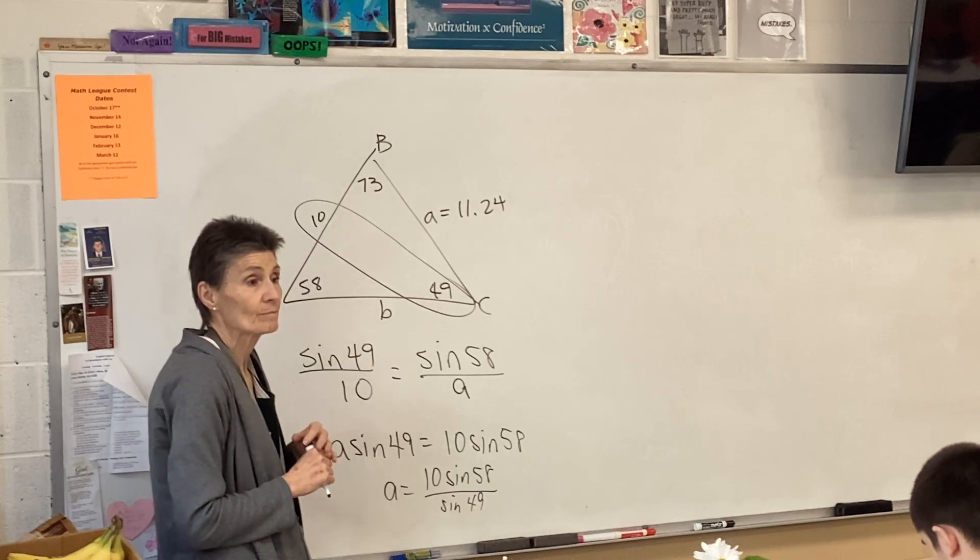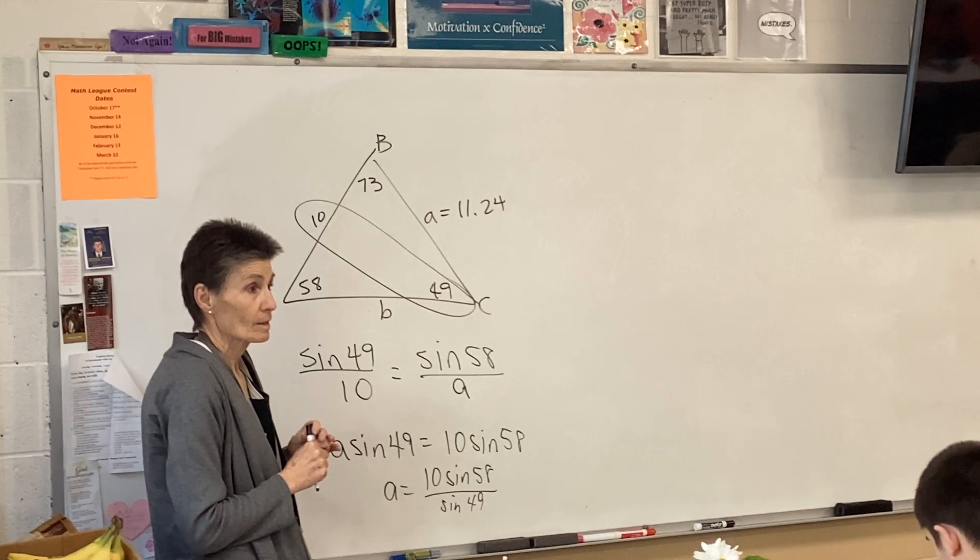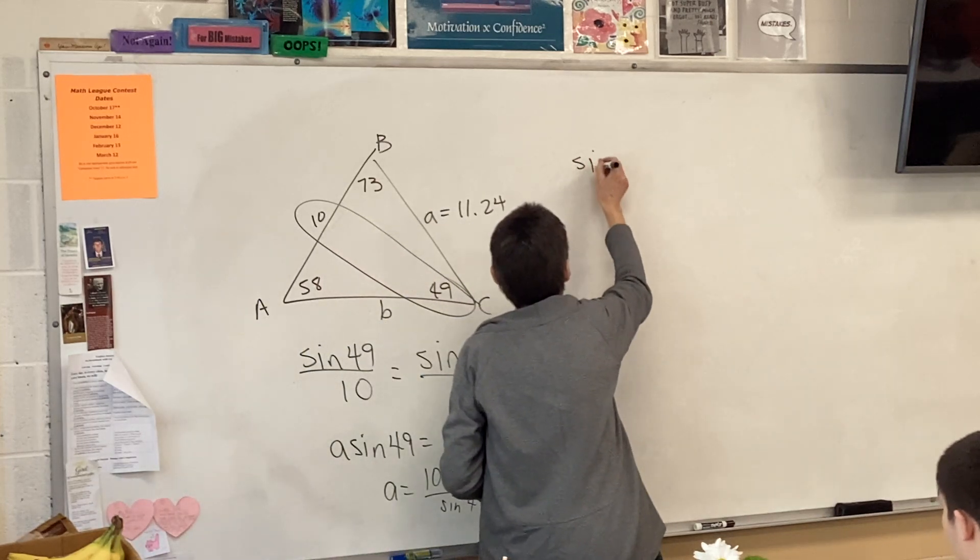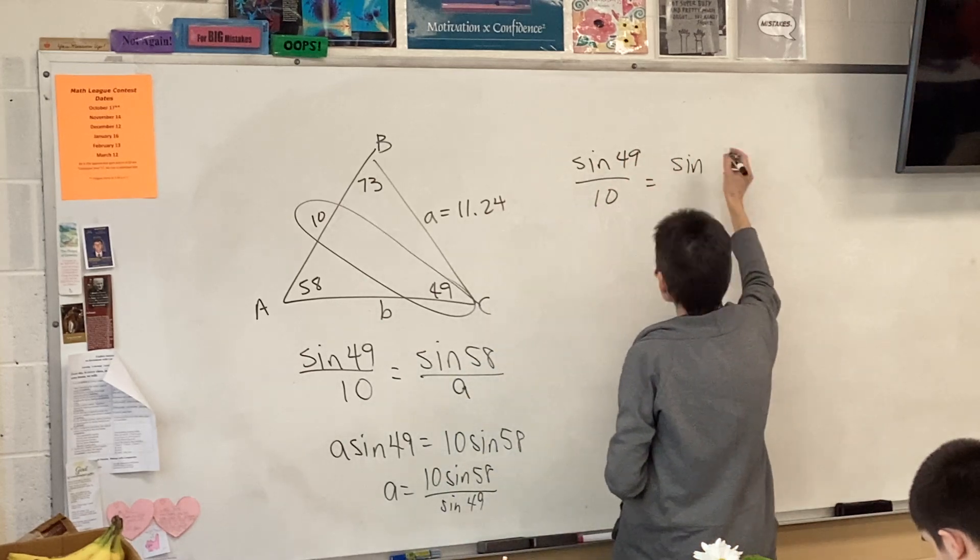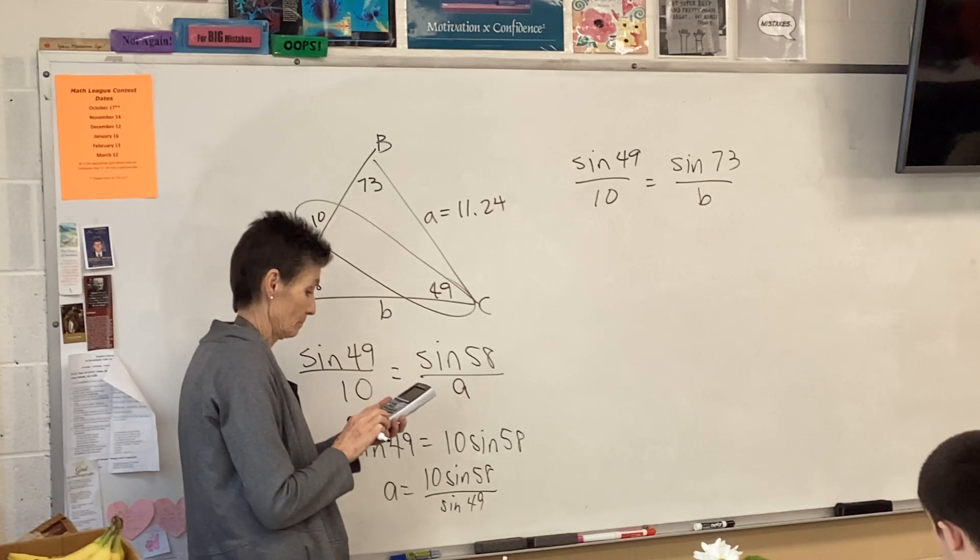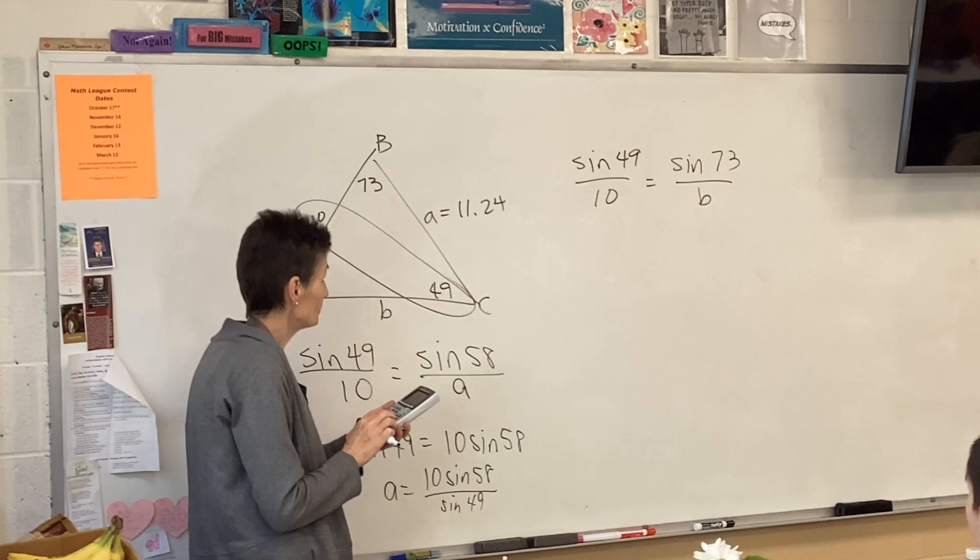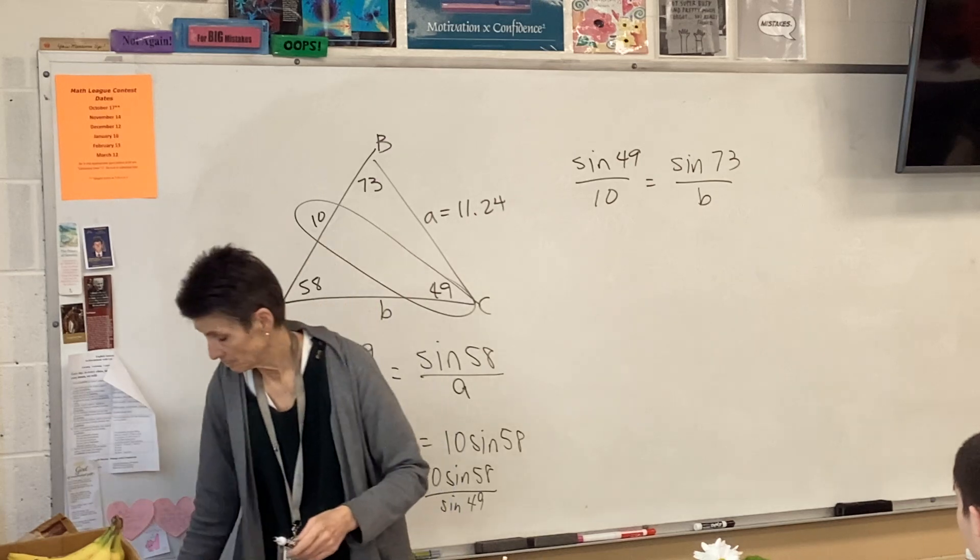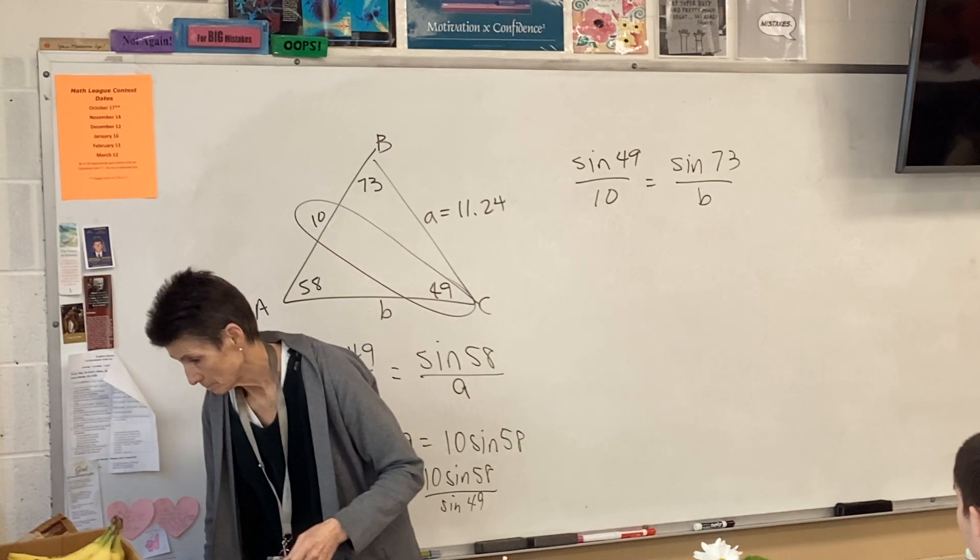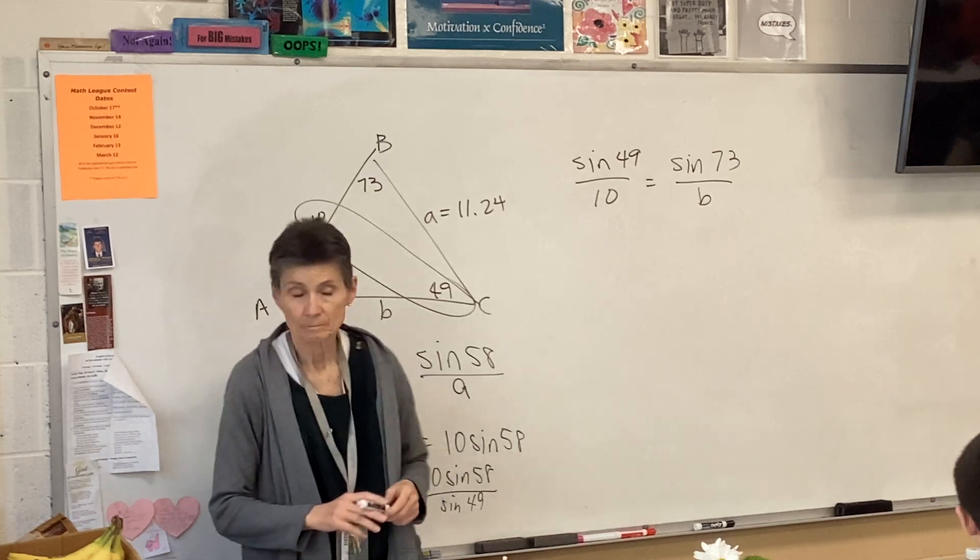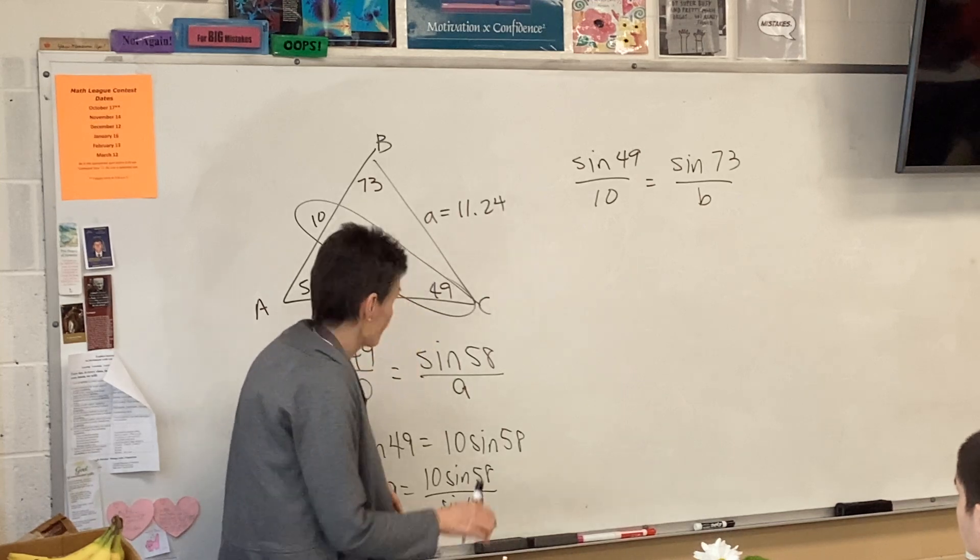Now what? Sine 49 over 10 equals sine 58 over A, for example. I just picked that one. Okay, so now I'm going to cross-multiply. We're all going to get our calculators out. We're all going to cross-multiply. And what did you get for side A? Anybody got it yet? 11.24.